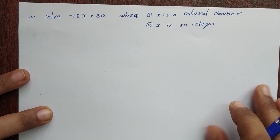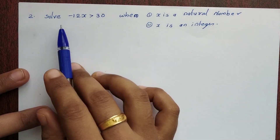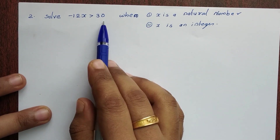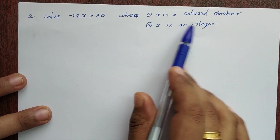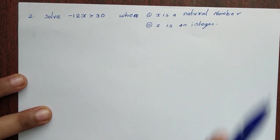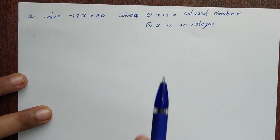Second question: Solve -12x greater than 30, when (1) x is a natural number, and (2) x is an integer.